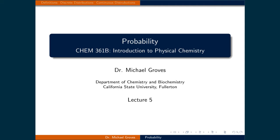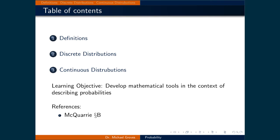Welcome to Lecture 5! Quantum mechanics is a probabilistic model where events occur with some likelihood. In today's preparation lecture, we will examine concepts and probabilities, so that when we examine quantum mechanical problems, we will have all the tools necessary to quantify them. This lecture is broken down into three parts: definitions of probability theory, discrete distribution examples, and continuous distribution examples.